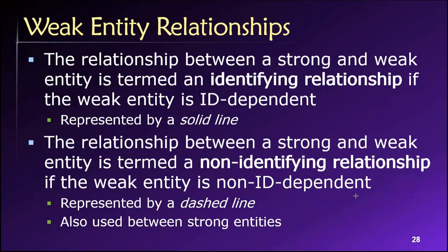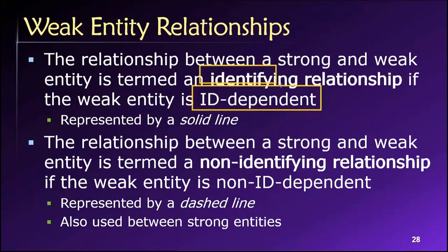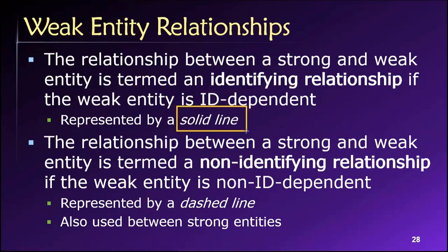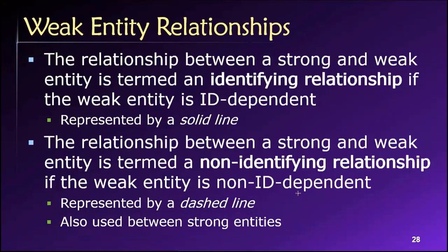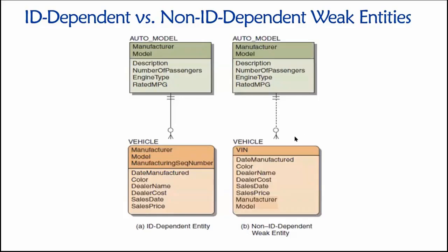Graphically, when we're doing entity-relationship diagrams, we will represent ID-dependent or identifying relationships using a solid line connecting the two associated entities. Non-identifying relationships will be represented using a dashed line, which is also used to show the relationship between two strong entities. The best way to learn these is just to see examples.